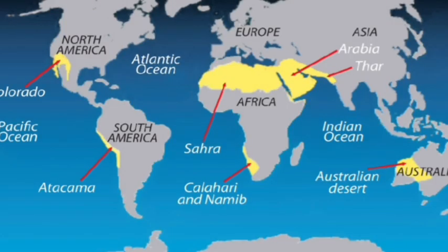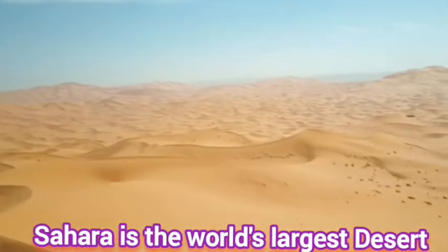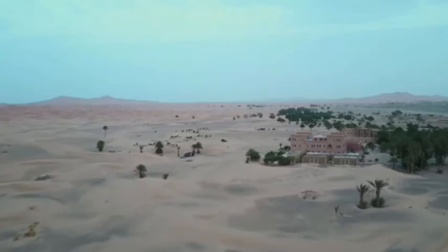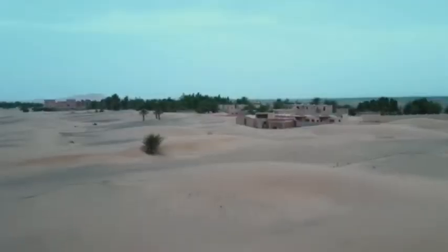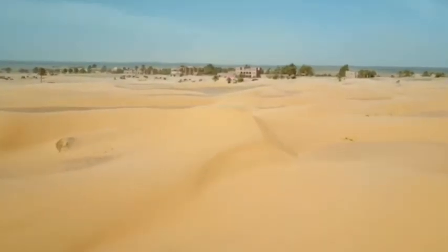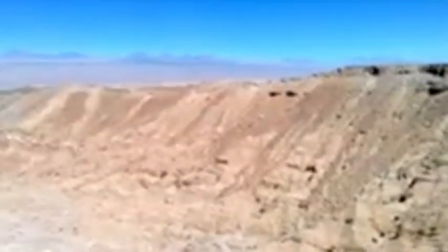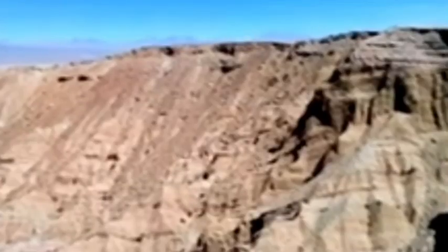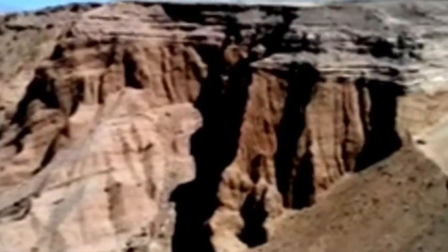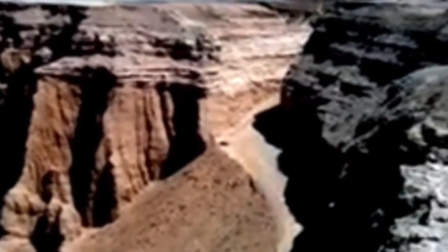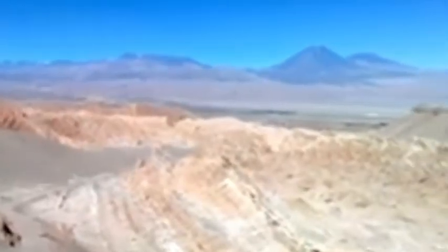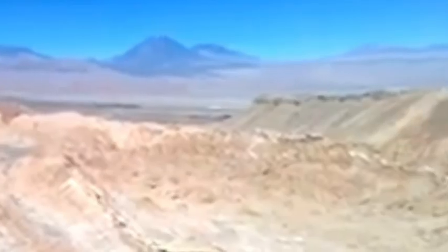The second tropical region is the tropical desert, which is almost barren land located between 15 and 30 degrees north and south latitude of the equator. The largest hot desert is the Sahara Desert in North Africa. Other deserts include the Kalahari, Atacama, Colorado, Arabian, Thar and Australian deserts. Deserts are located on the western margins of the continents, except for the Sahara Desert in Northern Africa.